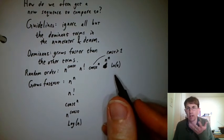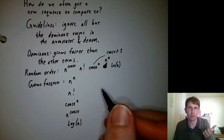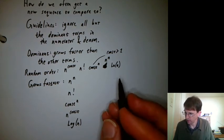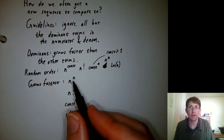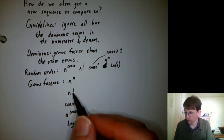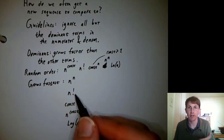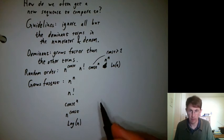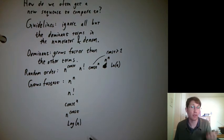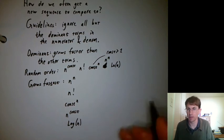I wrote natural log here, but really any log, they all grow at the same rate, just multiplied by some constant. So if you see an n to the n, that's clearly the dominant term. n factorial is the next dominant. You could say, which of these relate to geometric series, and which of these relate to p series? Take a sec to think about that.